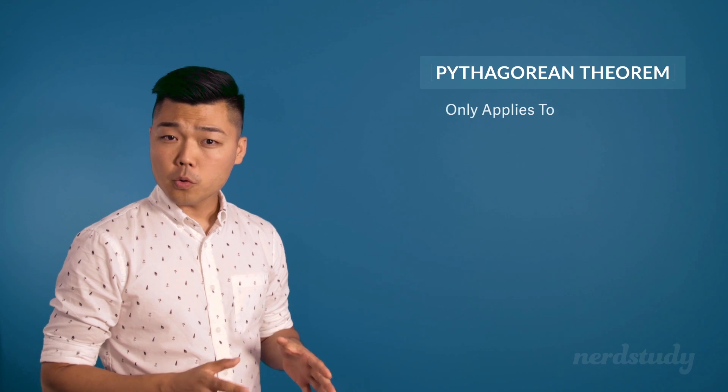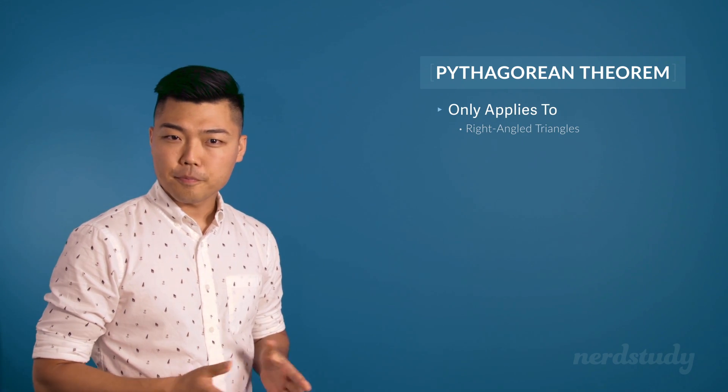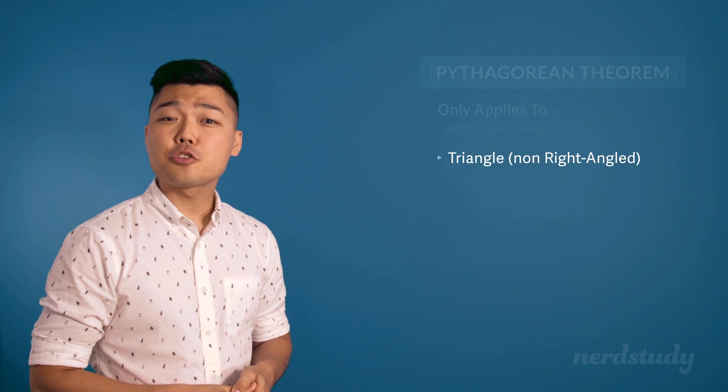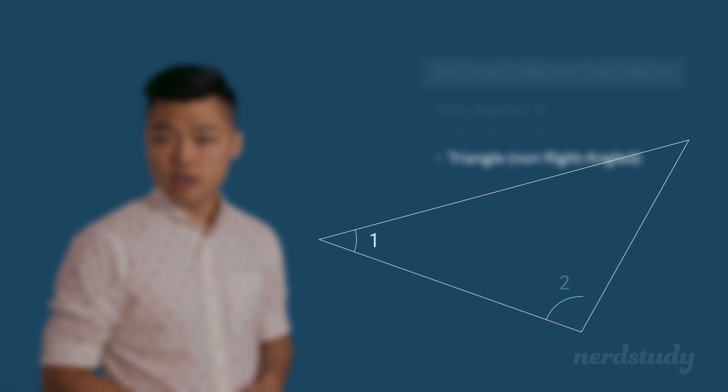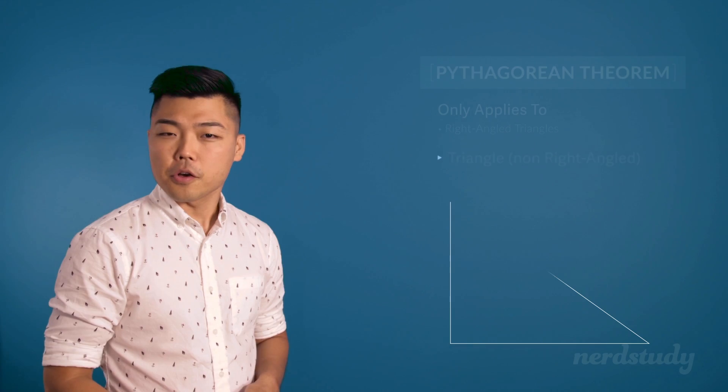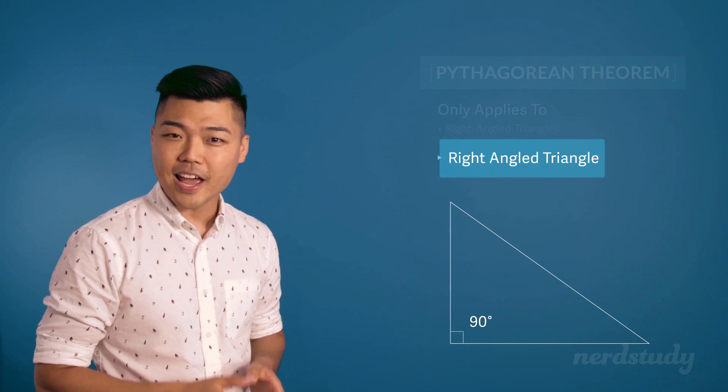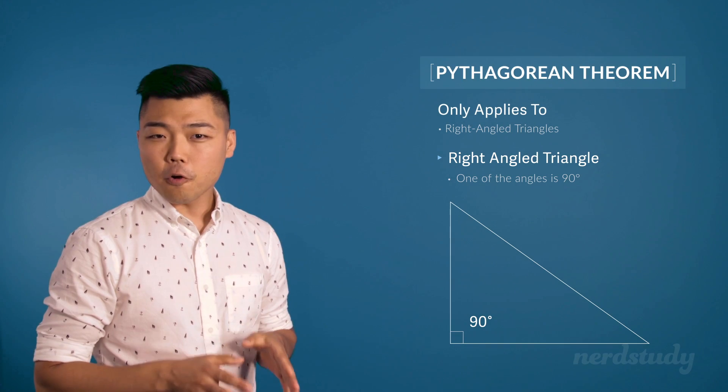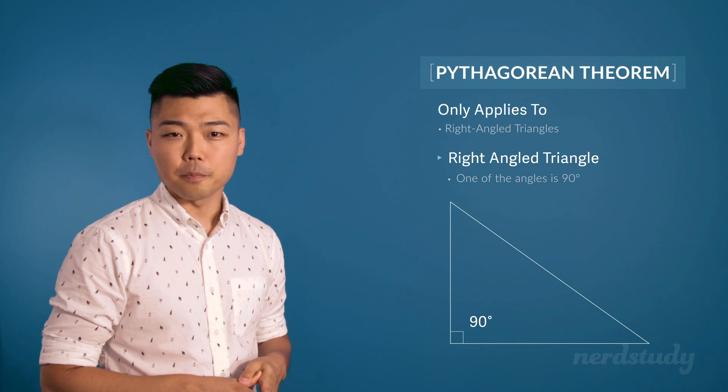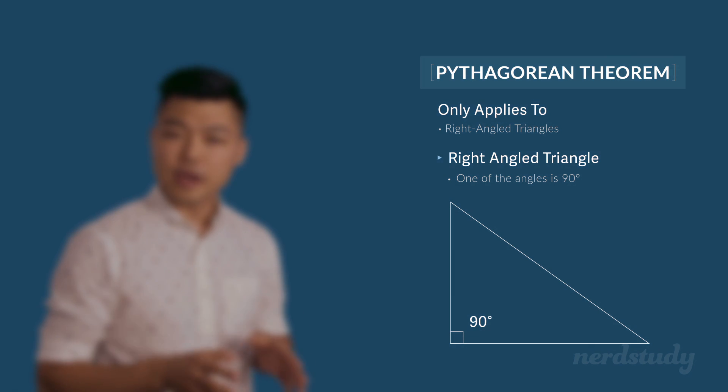The Pythagorean theorem only applies to all right-angled triangles. Now, if you remember correctly, a triangle is made up of exactly three angles. If one of the angles is 90 degrees, then this type of triangle is called a right-angled triangle. So before we show you the Pythagorean theorem, just make sure that you remember you can only use this for right-angled triangles.